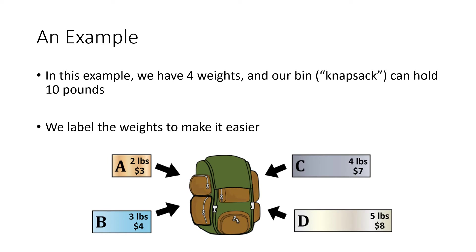As an example, let's say we have a knapsack with a capacity of 10 pounds and four different objects to pack into it, labeled A, B, C, and D. A weighs two pounds and is worth three dollars. B weighs three pounds and is worth four dollars. C weighs four pounds and is worth seven dollars. D weighs five pounds and is worth eight dollars.